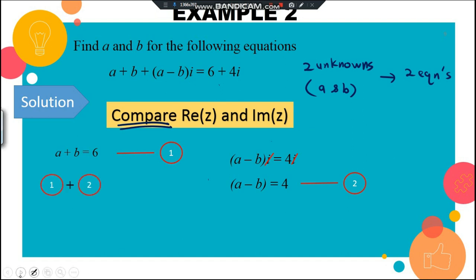Now just solve equation 1 plus equation 2 using elimination. Adding the two equations: a plus a gives 2a, and b plus negative b cancels to zero. So 2a equals 6 plus 4, which is 10, giving a equals 5.